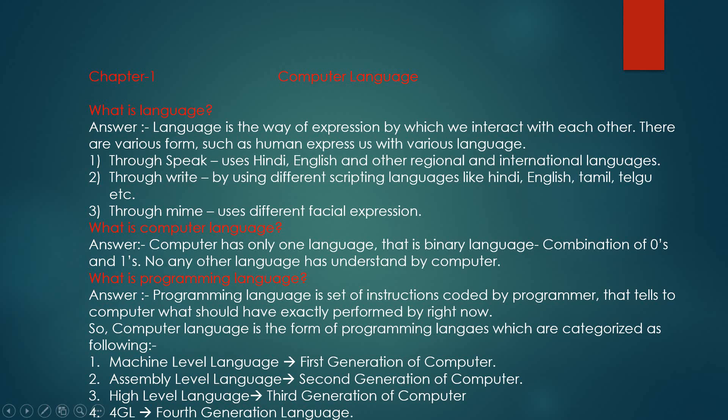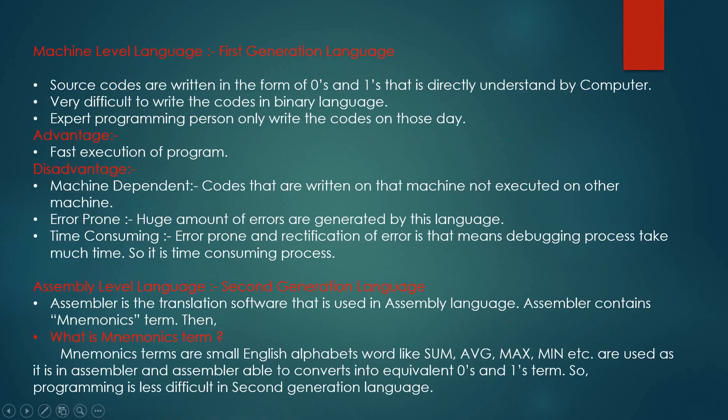There are different programming languages divided into generations of the computer. The first generation is machine-level language, the second generation is assembly-level language, the third generation is high-level language, and the fourth generation is the fourth-generation programming language. Let us start with the first generation: machine-level language.